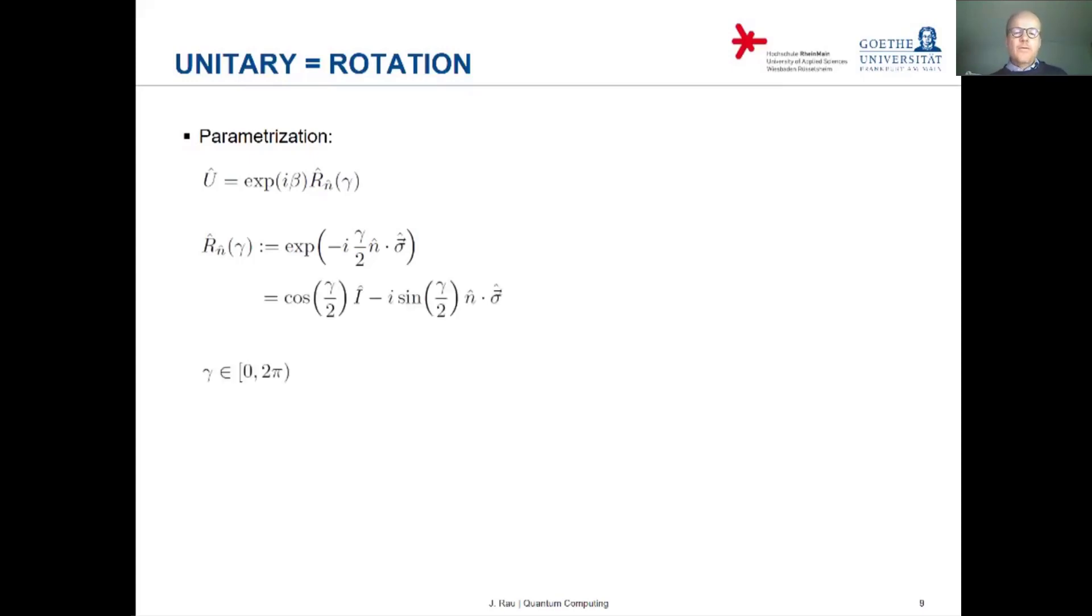And here's another way of writing it. You can expand the exponential as a cosine of gamma over two times the unit operator minus i sine of gamma over two. And then this scalar product unit vector n times vector of Pauli operators sigma. I will show you in an example how this looks like.